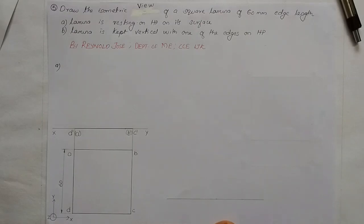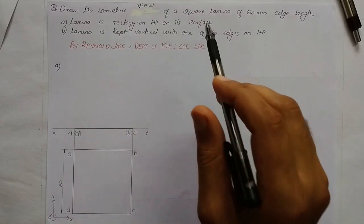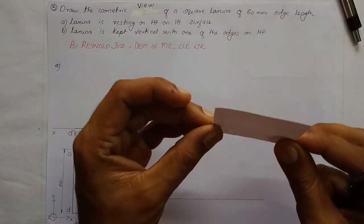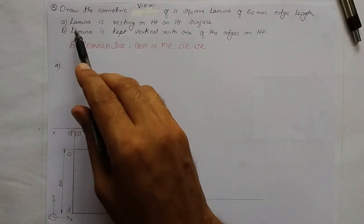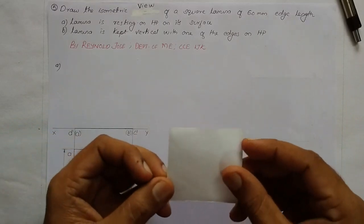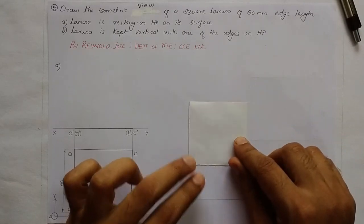For the first condition, the lamina is resting on HP on its surface. A lamina means a flat surface which doesn't have any thickness, or which has negligible thickness — it effectively has only two dimensions: length and breadth. Here we are having a square lamina, and we shall consider the first condition. The lamina is resting on the horizontal plane.